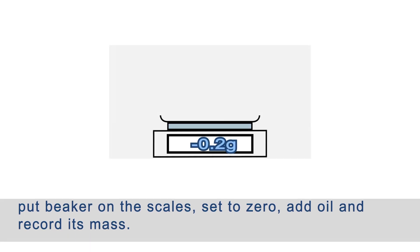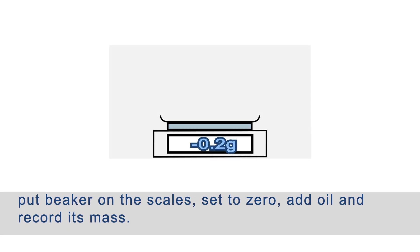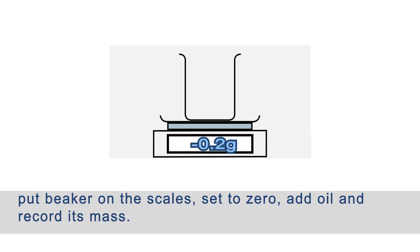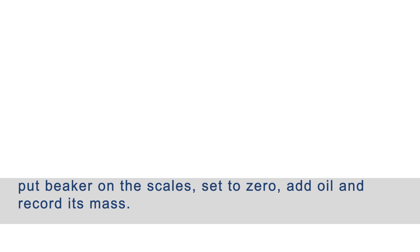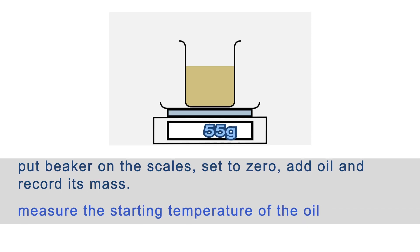First we need to know how much oil we've got, so write something like: put the beaker on the scales, set the scales to zero, add oil to the beaker, and record the mass. Next, say that you're going to measure the starting temperature of the oil.